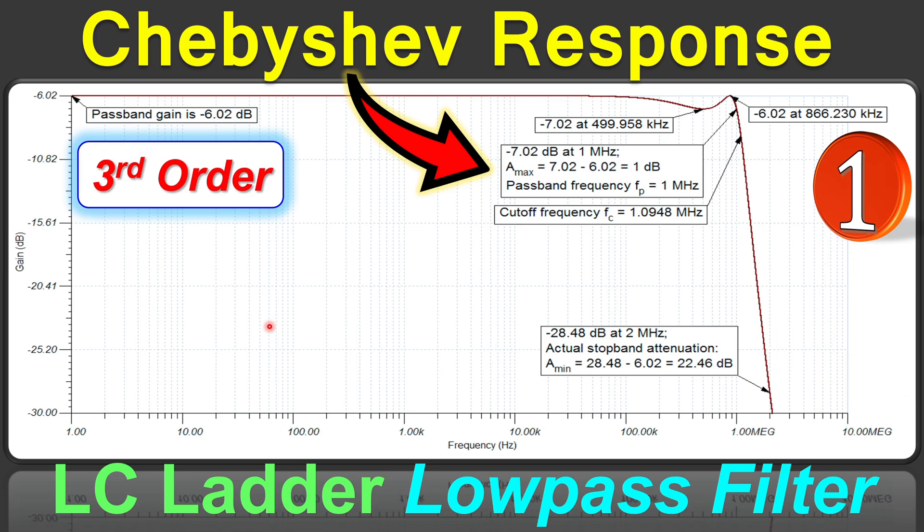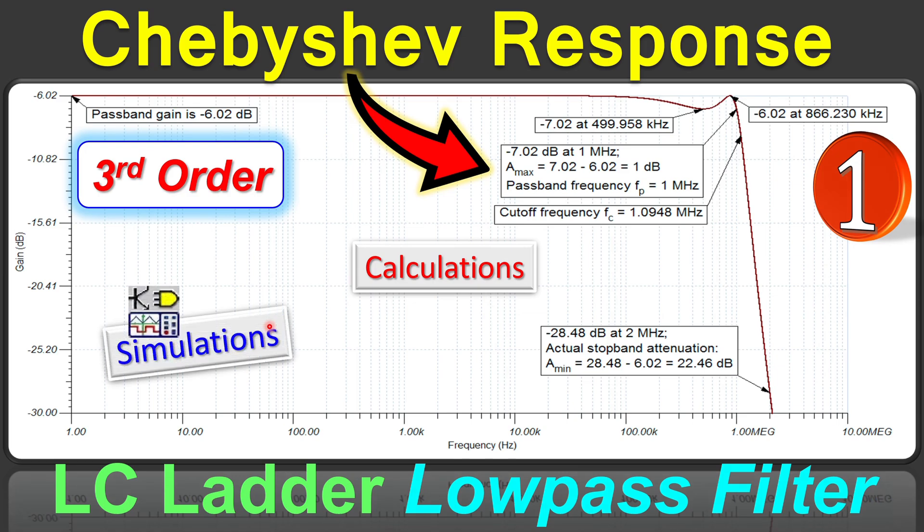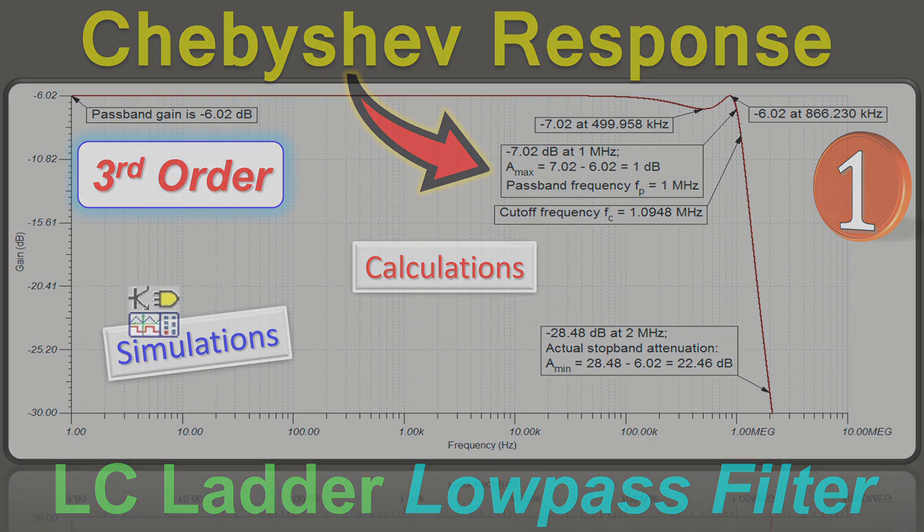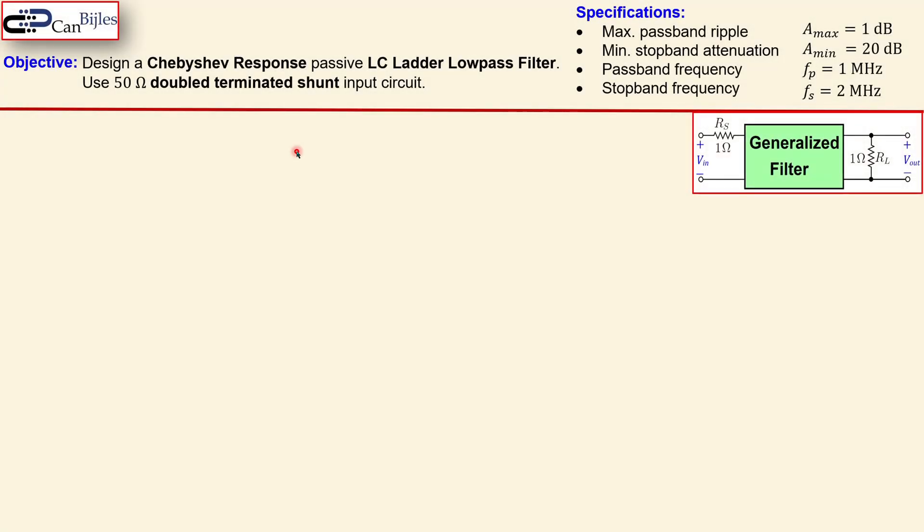We will consider the low-pass filter configuration and there will be a third order. We will calculate this in our calculation step by step and also verify these in SPICE simulations. So let's look at our example.